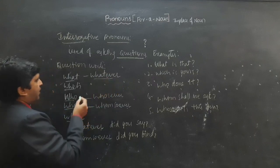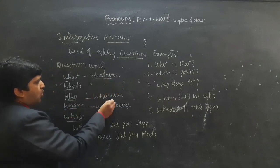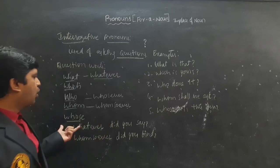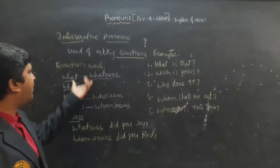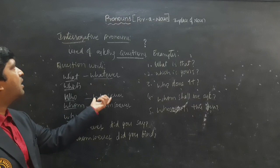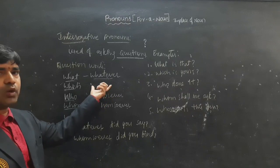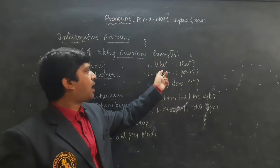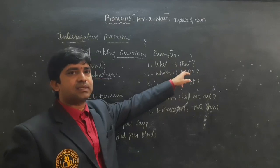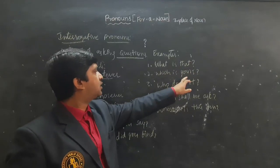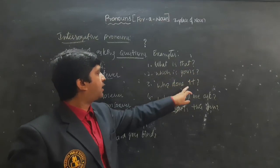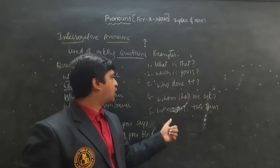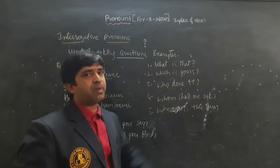By adding suffixes we form compound Interrogative Pronouns: whatever, whatsoever, whichever, whosoever, whomsoever. Examples: 'What is that?' 'Which is yours?' 'Who done it?' 'Whom shall we ask?' 'Whose is this spell?'